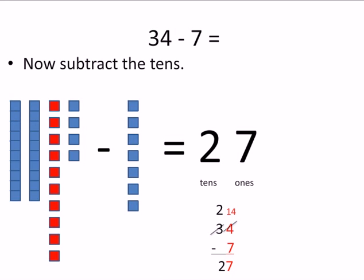Now, look down at the bottom. I wrote it up and down. Can you find 34 minus 7? I made the ones red. So we had 4 minus 7 and we couldn't do it.